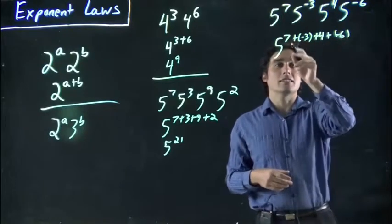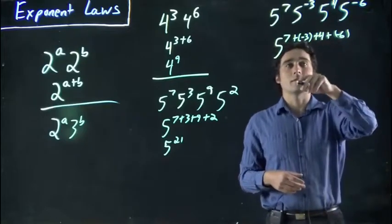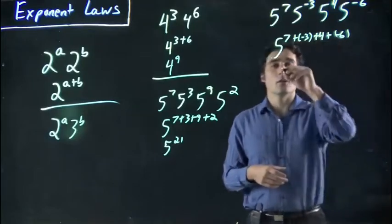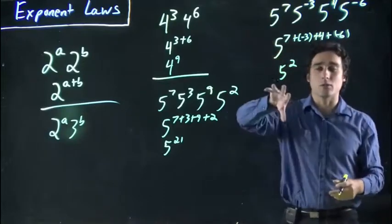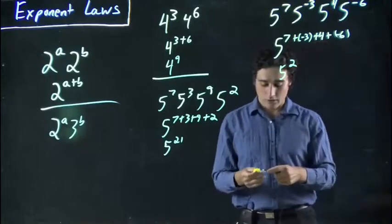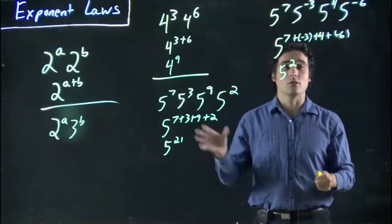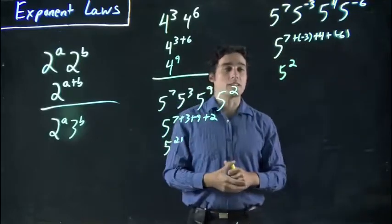So, it's really 7 minus 3, plus 4, minus 6. So, 11 minus 9, really, or 5 squared, and then we could say, hey, it's 25. Or, if we just want to leave it as an exponent, we could just call it right there. So, this is a pretty quick introduction to how you handle the multiplication ones, and that's all we need.